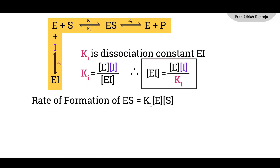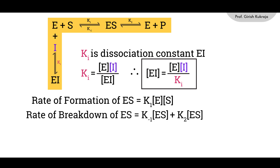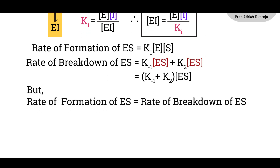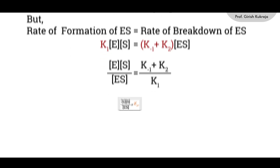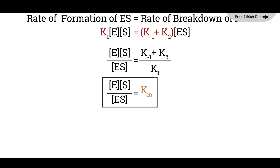The rate of formation of ES equals K1 · E · S. The rate of breakdown of ES is given by (K'1 + K2) · ES, since ES can break down into either E + S or E + P. At steady state, the rate of formation equals the rate of breakdown: K1 · E · S = (K'1 + K2) · ES. Rearranging, E · S / ES = (K'1 + K2) / K1, which defines Km. So Km = (E · S) / ES.